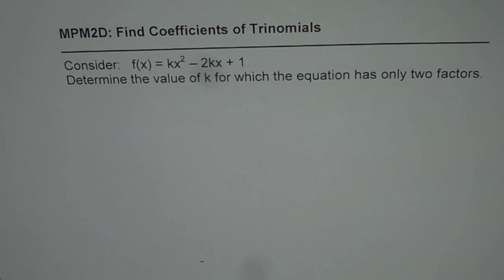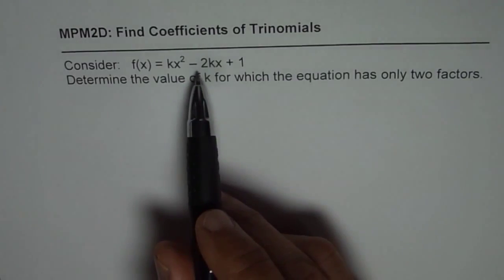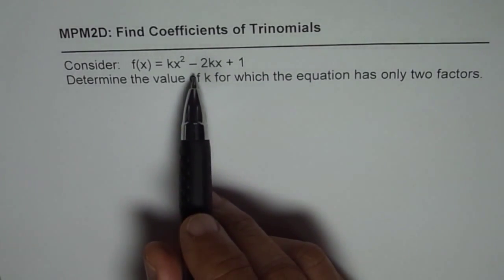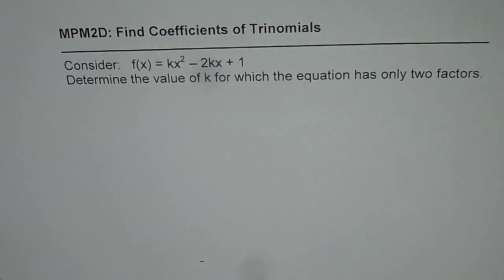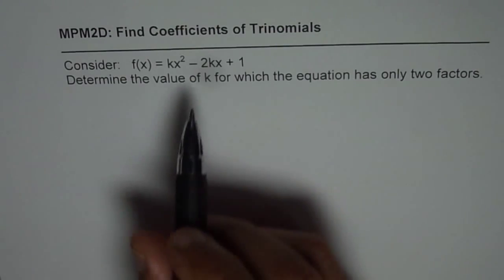So that means there are possibilities of having one factor or two factors. There is a possibility that we cannot even factor a trinomial. So in this particular condition we are looking for the value of k which will give us two factors. So that is the question.